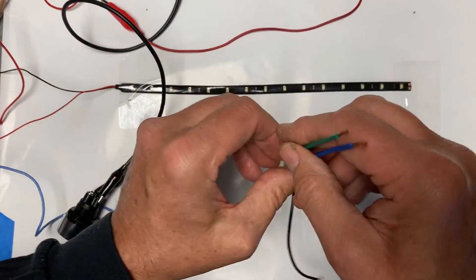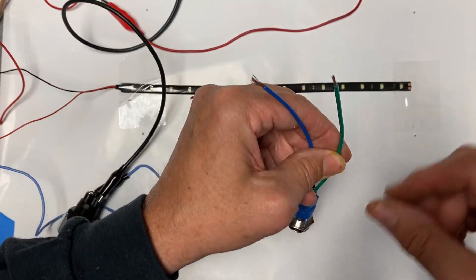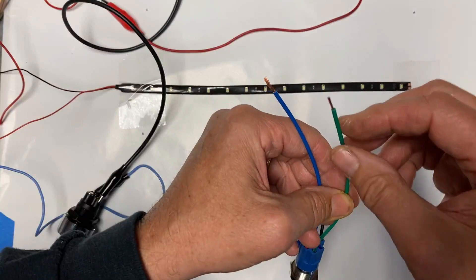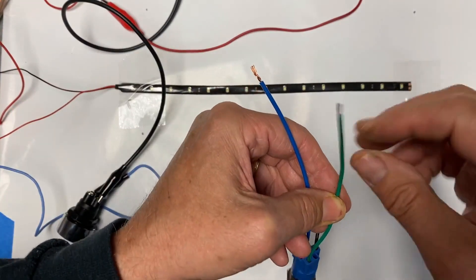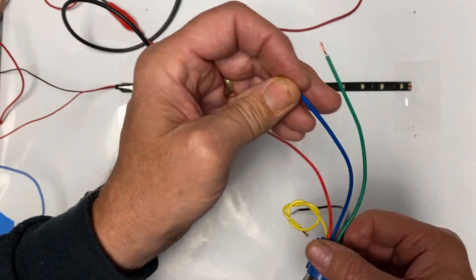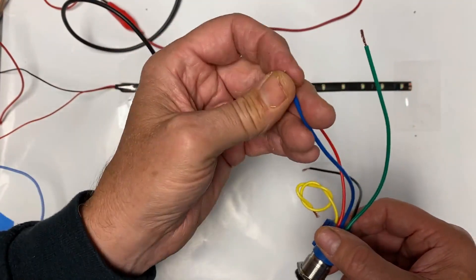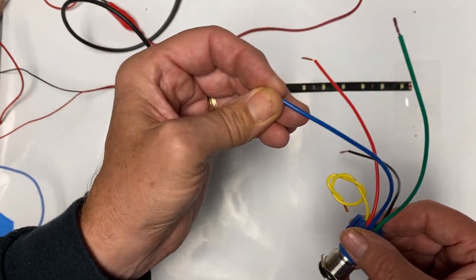The blue and the green - and they may be different colors on different models - but the blue and the green, generally you have a common, which for our purposes would be ground, and you have a normally open, the blue one, which for our purposes would be used to trigger the water pump.